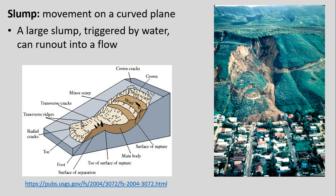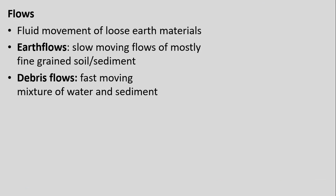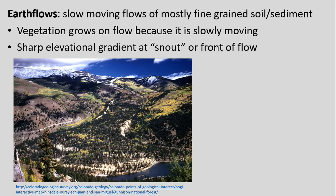Moving to slumps: this is where we have movement on a curved plane — think of it as a scoop with a rotational element. Slumps are often caused by an addition of water, making material looser so it moves down, and can run out or turn into a flow. When we move more to fluid elements, as the name would imply, it's a flow — with lots of fluid in it. It's a much more wet type of mass movement than, say, a rock fall. Earth flows and debris flows are examples of these fluid movements. Earth flows are actually the one contradiction — a very slow-moving flow of mostly fine-grained material.